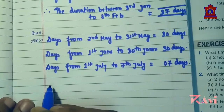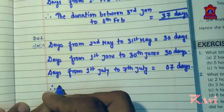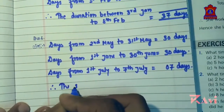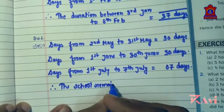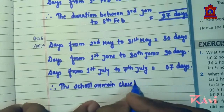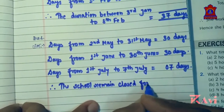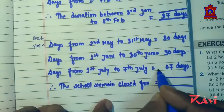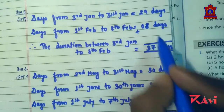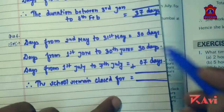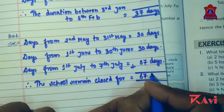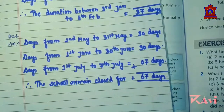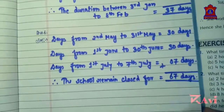Therefore the school remained closed for — by addition: 30 plus 30 is 60, plus 7 is 67 days. Like this you have to find out the answer.